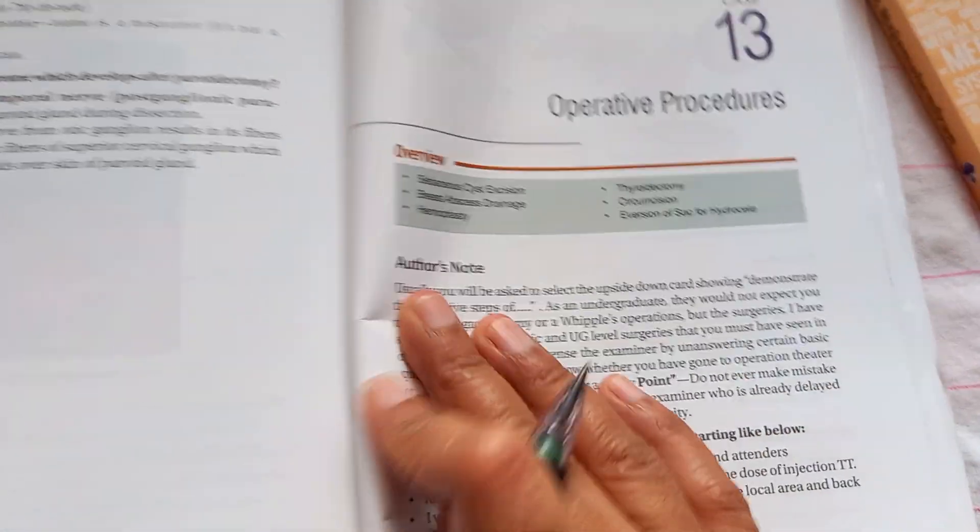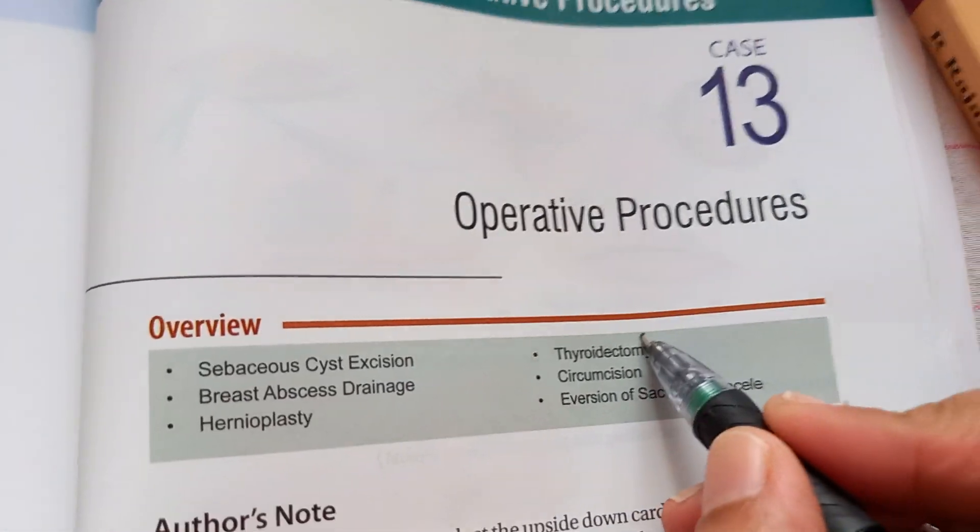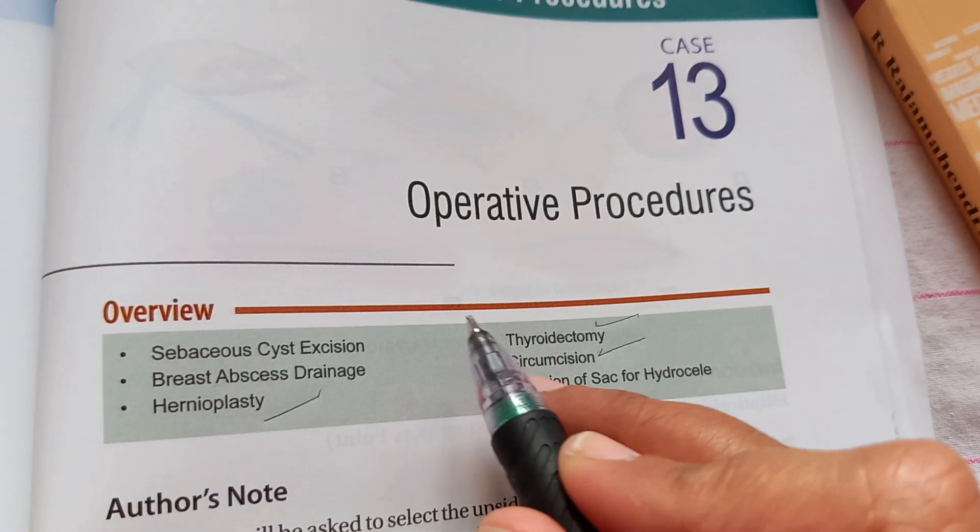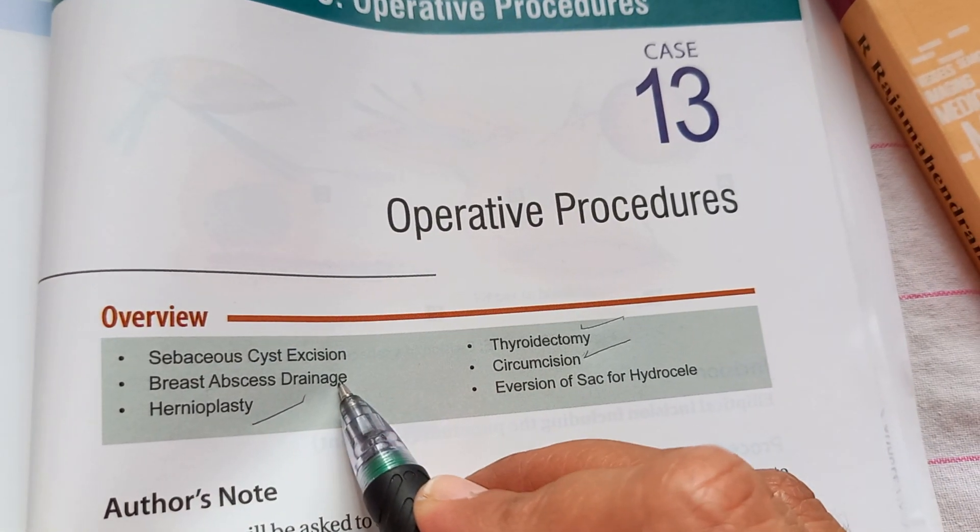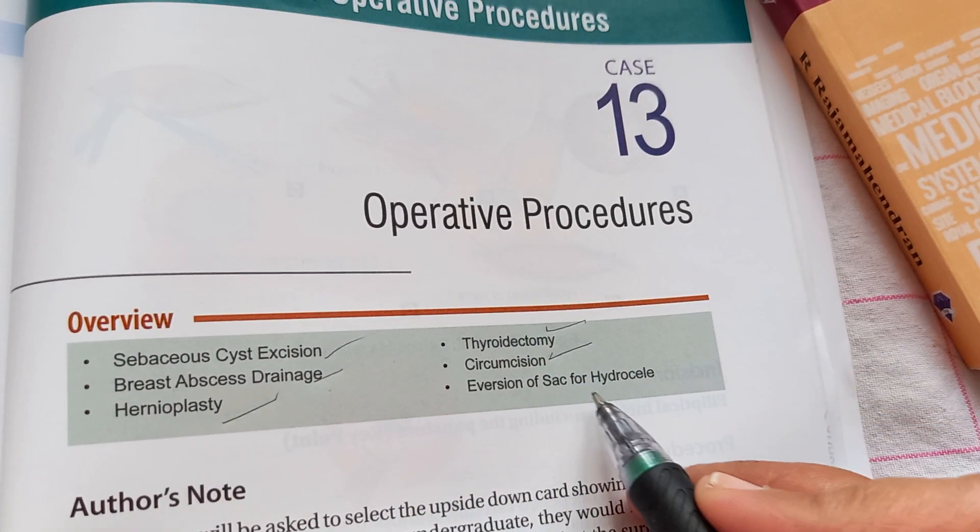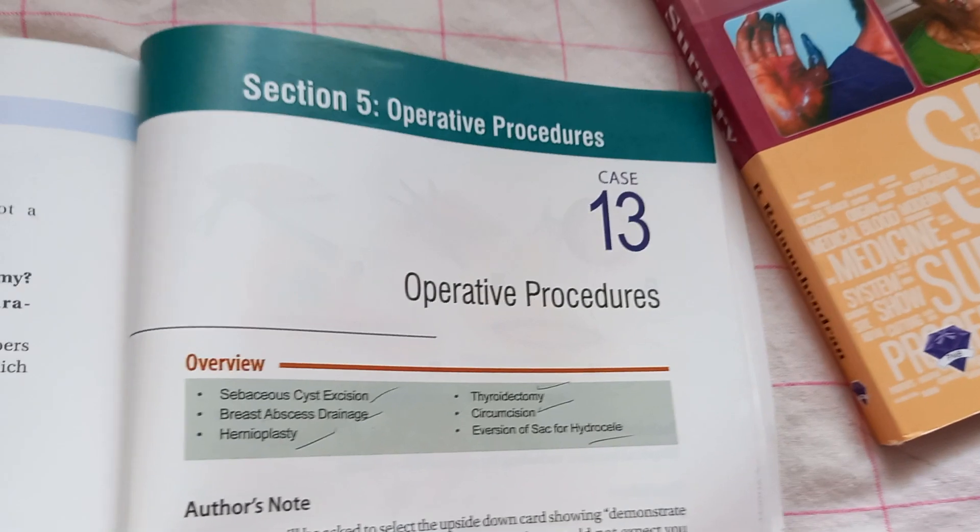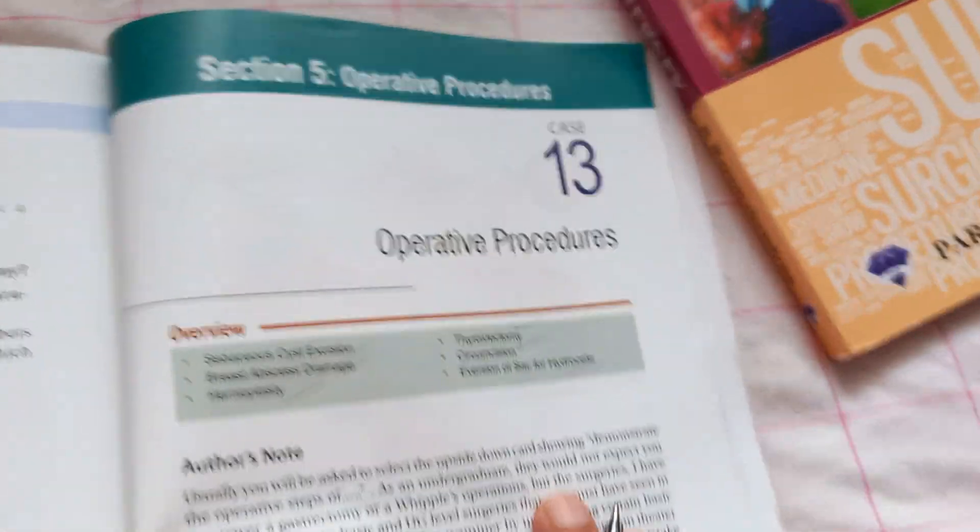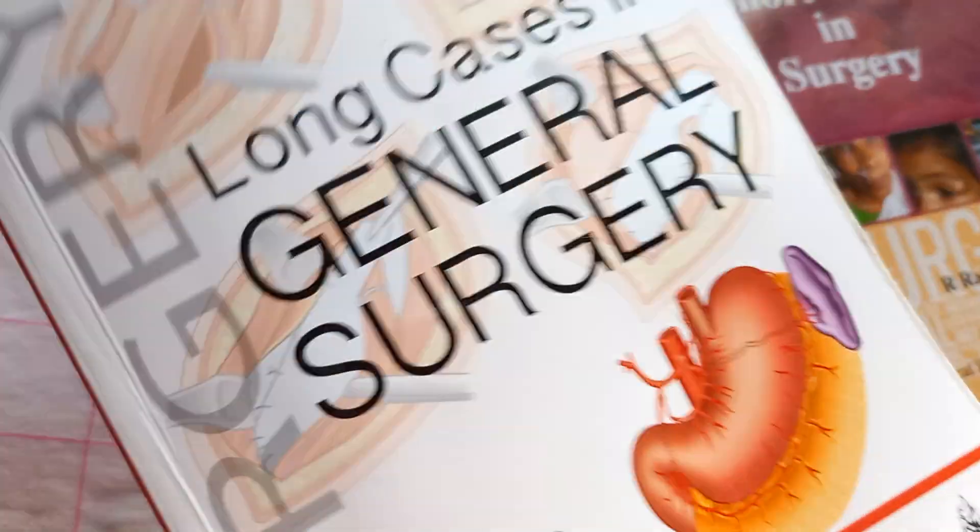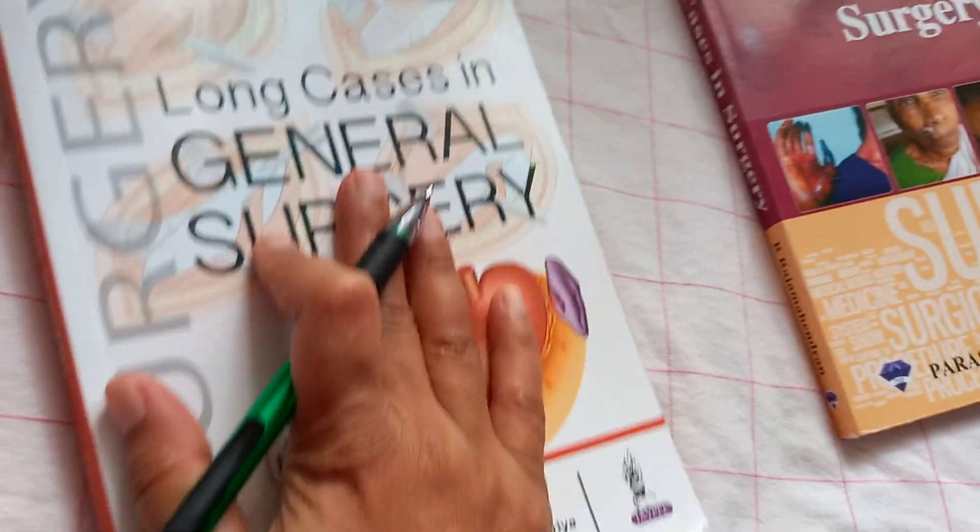Operative procedures also, they will ask. Like, mainly they asked me thyroidectomy. Circumcision, they will ask. They will ask hernioplasty how to do. How will you drain an abscess? They can ask you Hilton's drainage, sebaceous cyst excision, hydrocele, that is marsupialization. So all this they can ask you as operative procedures. So this book itself can help you pass general surgery viva.